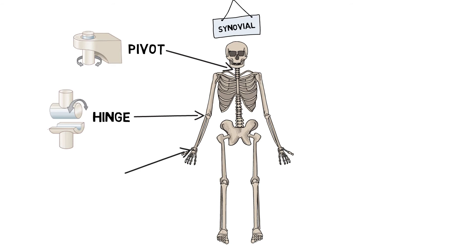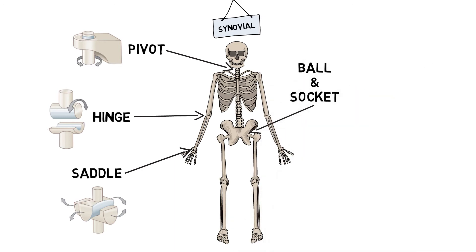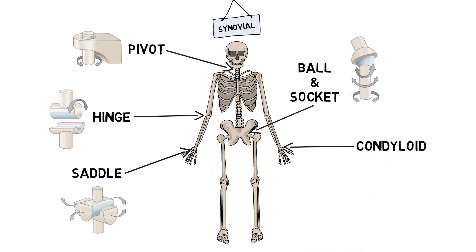Saddle joints act just like riding a saddle, where one bone saddles another. These joints allow forwards, backwards and side-to-side movements, such as in our thumbs. Ball and socket joints are made up of a round end of one bone sitting into a cup-like area of another. These joints allow movement in almost all directions, such as our hips. Condyloid joints fit one bone into a cavity of another, and only allow you to bend and straighten, and move side-to-side, such as in our wrists.